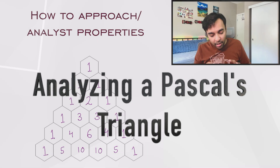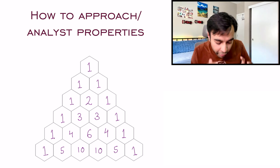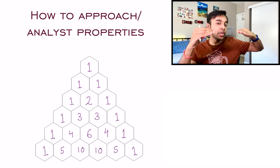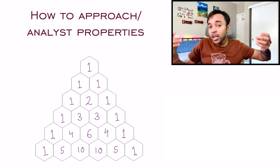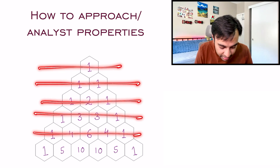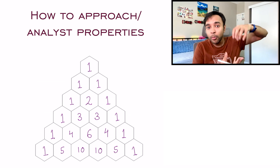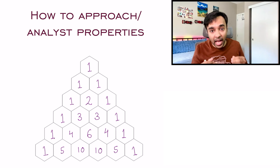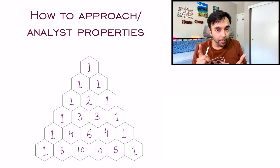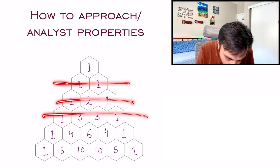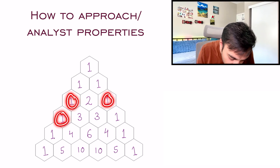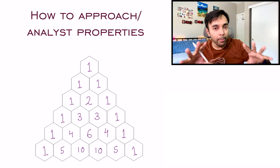Before you begin with the implementation, take a moment to think about how you can approach this problem. You need to return a list of all of these rows — it will be a list of lists. The first list, second list, third list, fourth list, fifth list, and sixth list, all in the form of a list itself. One thing is very obvious: for every list, the first element and the last element will always be 1. So except the first row, for every other row, you can add 1 as your initial element and 1 as the last element.